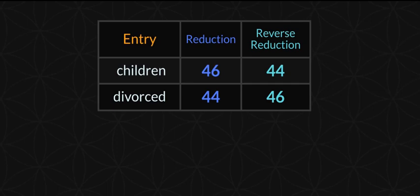Where does this all come from? It's gematria — Jewish mysticism that comes from Kabbalah. You apply the numeric value to the letter.